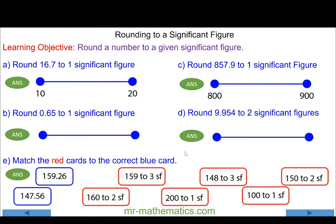In this lesson we're going to round a number to a given significant figure. We begin with 16.7. The first and most significant figure is the one, because it has the highest place value. You can see that 16.7 would be about here, closer to 20 than to 10. The six, which is the number after the one, does round up the one to a two, so to one significant figure 16.7 becomes 20.